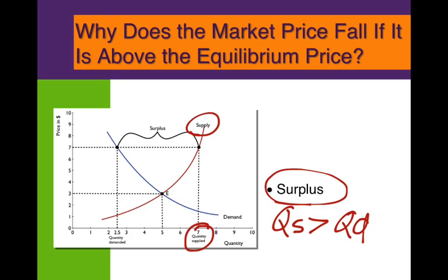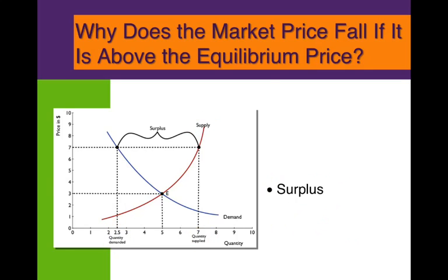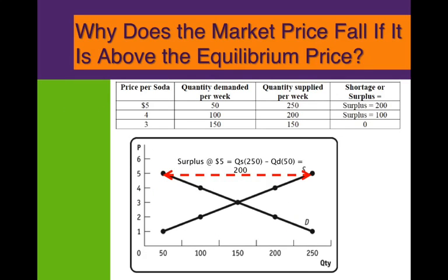The suppliers are going to pump out 7 units, but the demanders are only going to demand 2.5. So we've got a surplus. Going back to the soda market schedule: the equilibrium price is $3 and the equilibrium quantity is 150. However, what if we're dealing with a $5 price? The industry wants to supply 250.